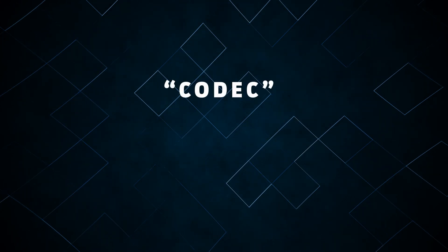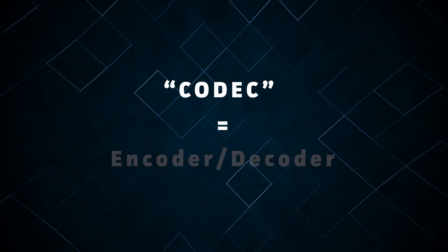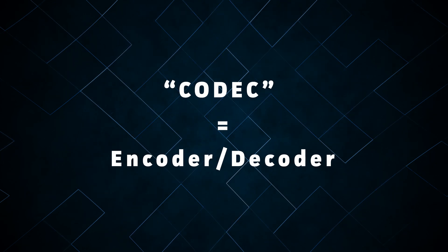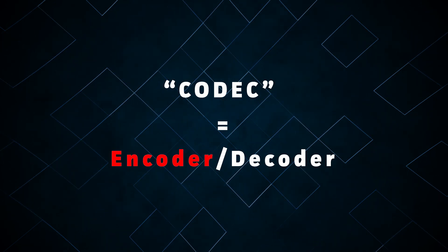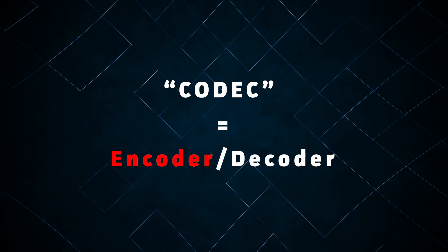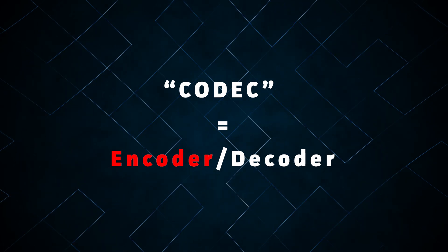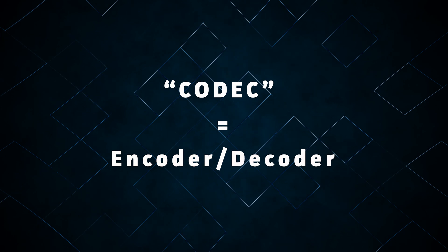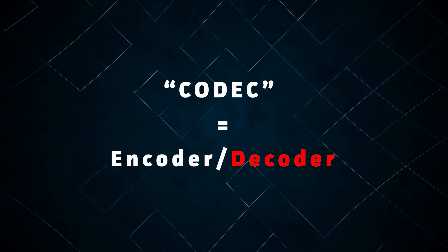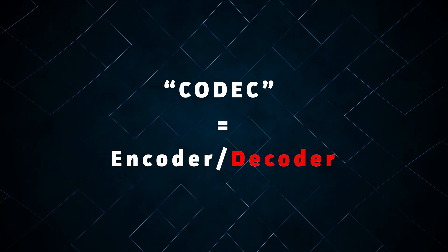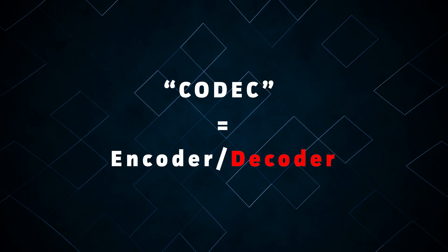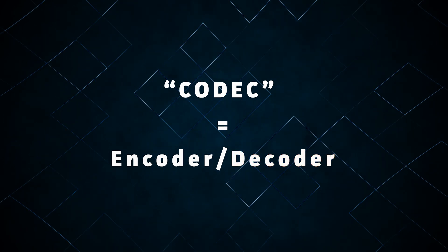The word codec is short for encoder-decoder. In the context of digital video, an encoder is a bit of software which converts a digital video into a stream of ones and zeros that can be written to a file or sent over the internet. And a decoder is a program that takes that stream and converts it back into a full-color digital video that can be sent to a display device.